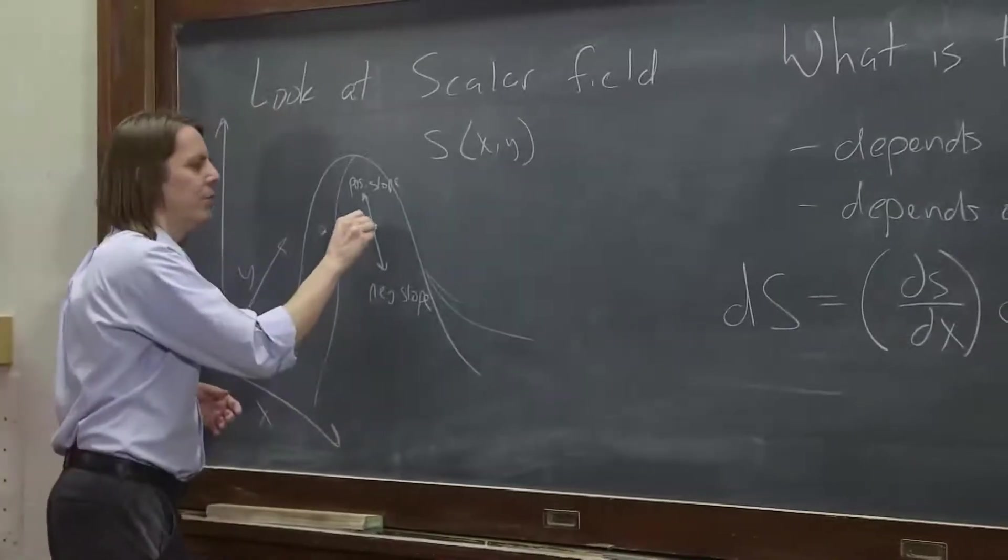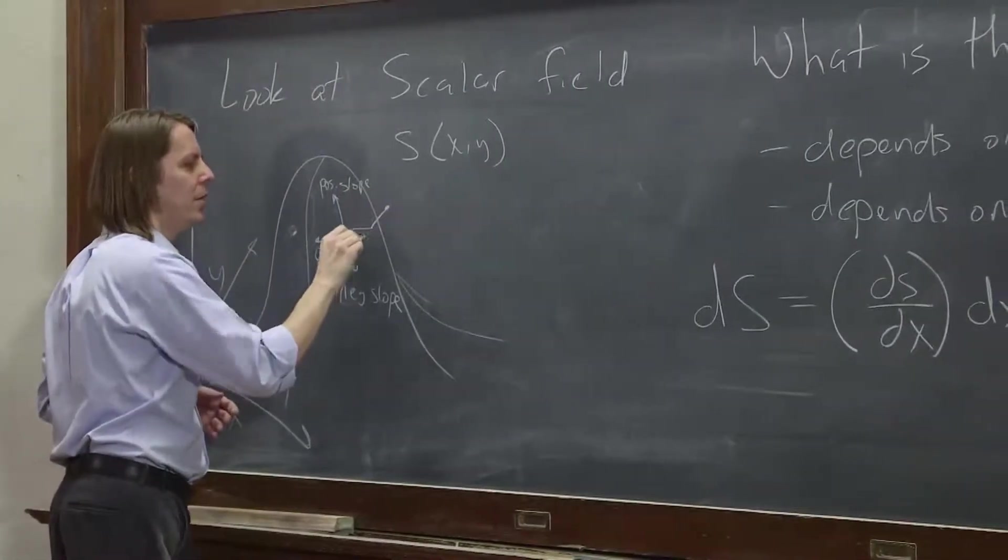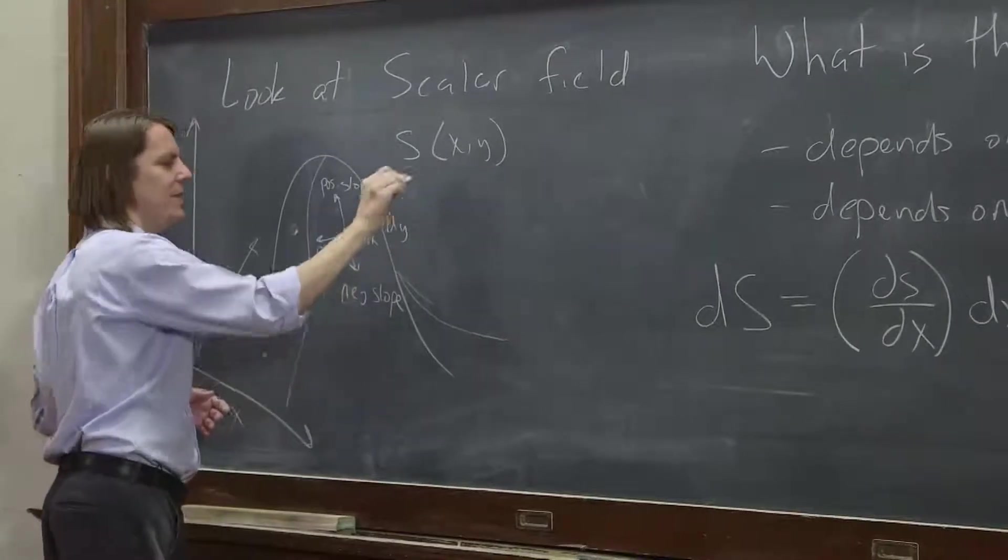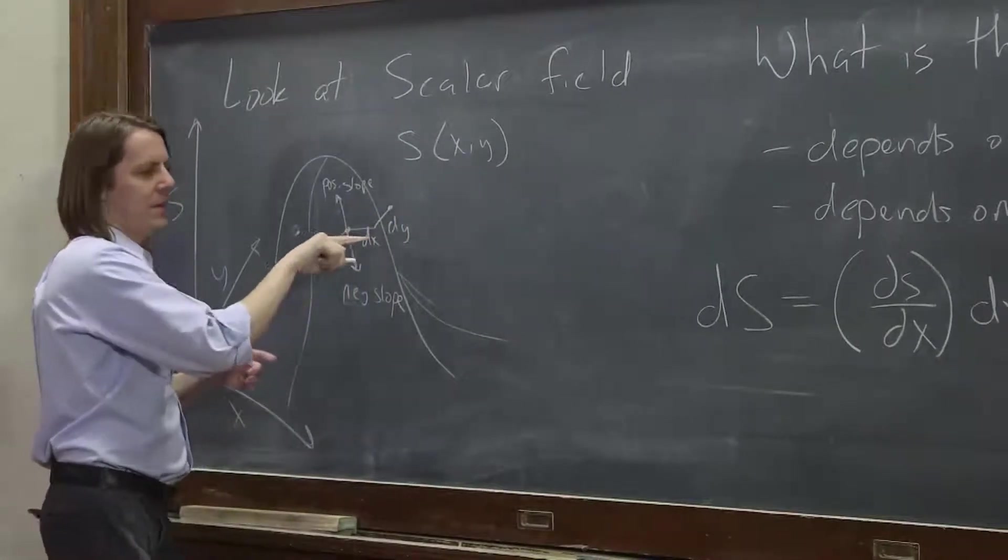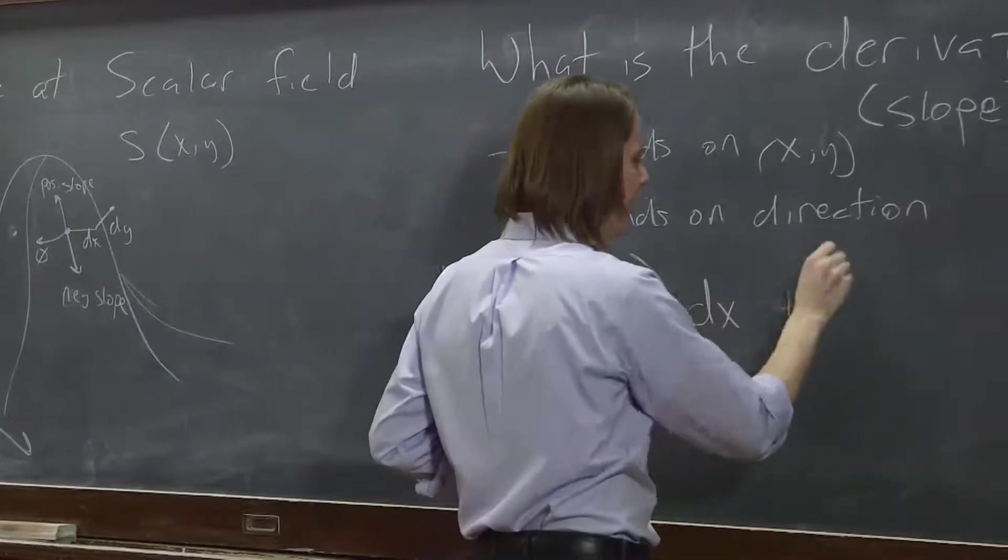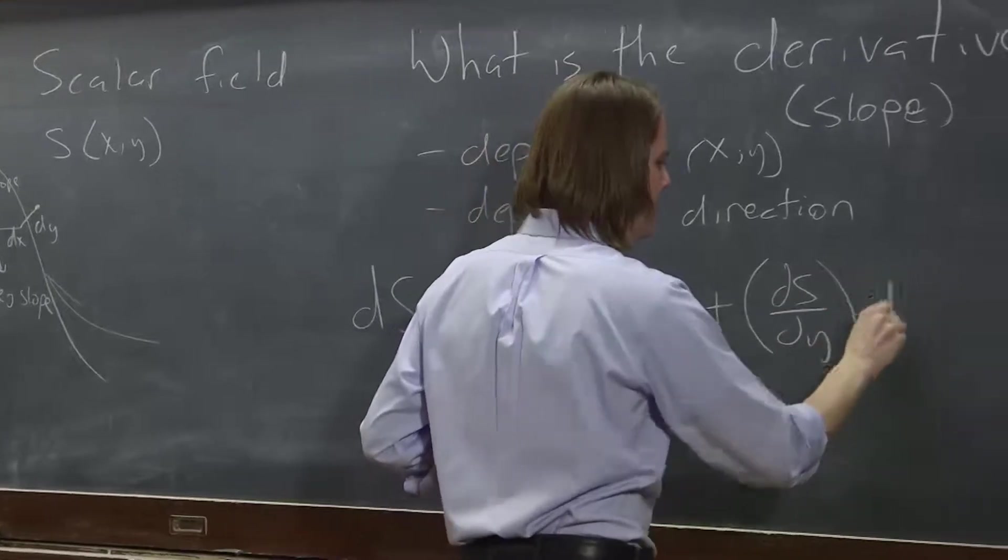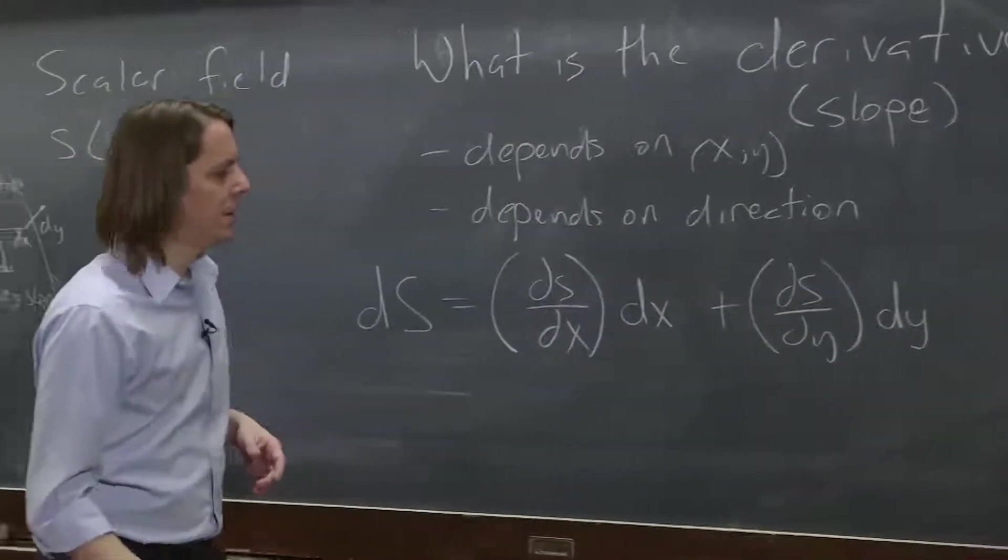Okay, so if I want to know what's the derivative this way, I move a little bit in x and I move a little bit in y. And say that's the way I'm going. Well, to get it, it's the partial dS/dx times that differential dx, plus the partial dS/dy times the differential dy.